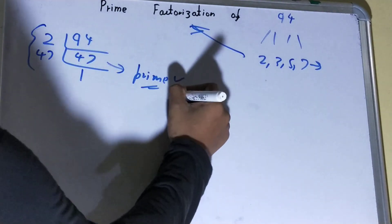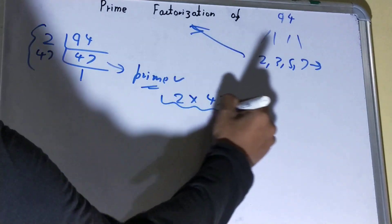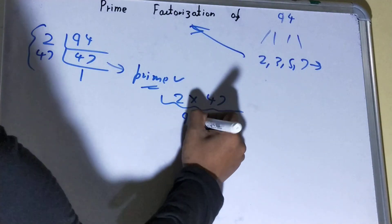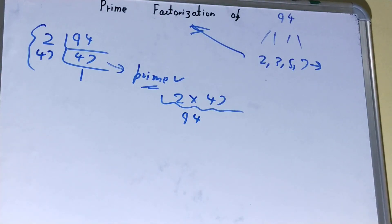Once you get the value as 1, you'll have your set of prime factors for the number 94, that is 2 into 47. If you want to check whether it is right or not, you can multiply them, and if on multiplying you get the number back again, that means your calculation is fully correct. If not, you need to recheck.